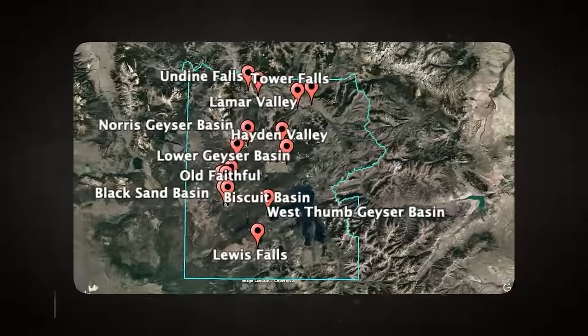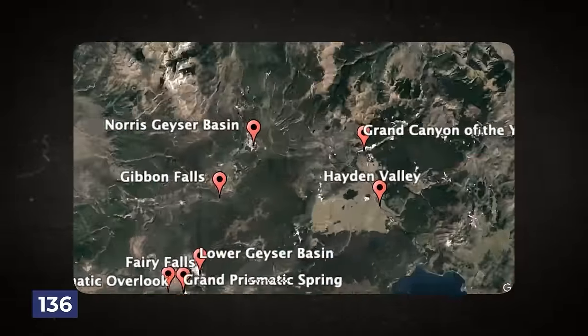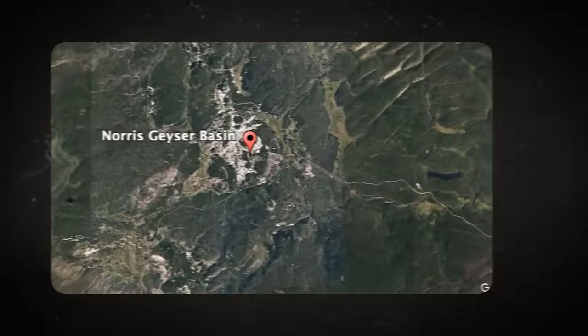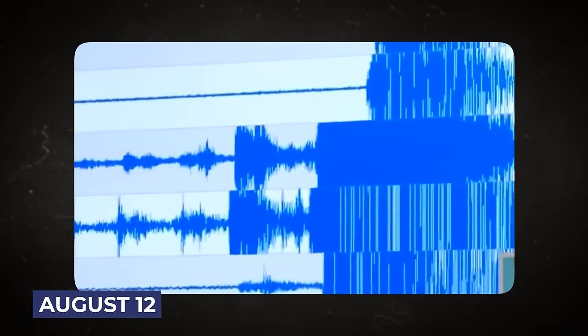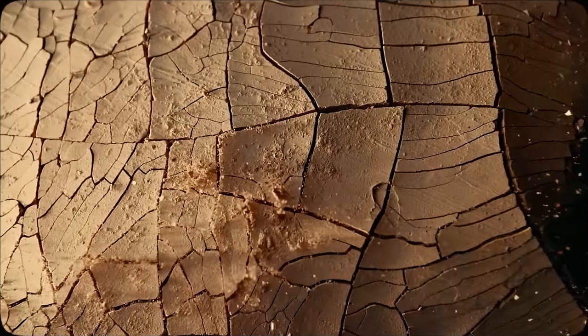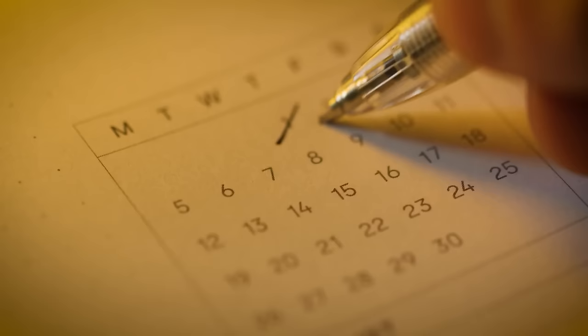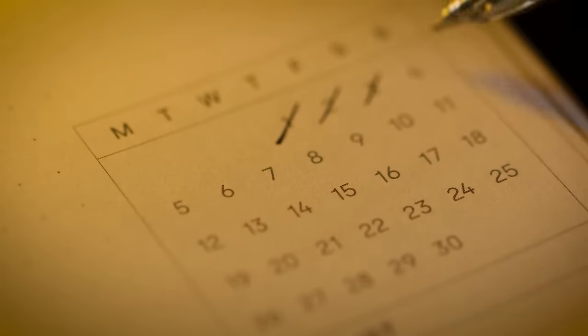In August, 136 earthquakes were located in the Yellowstone National Park region, with the largest having a magnitude of 2.7 on August 12th. Additionally, there was a swarm of 14 earthquakes in a three-day period from August 2nd to August 4th.